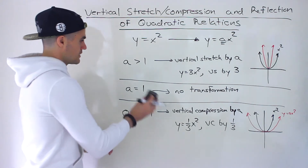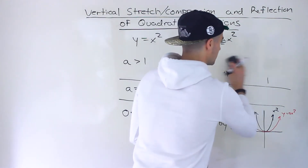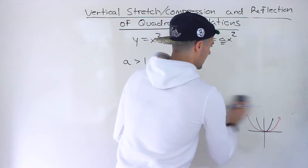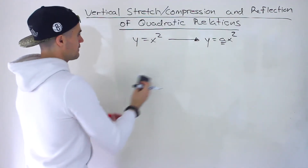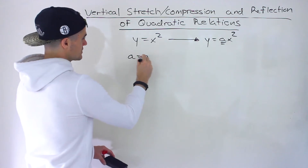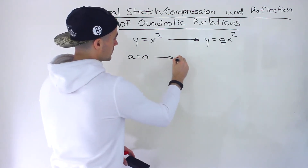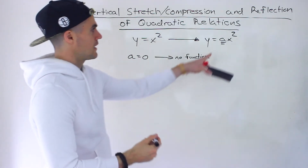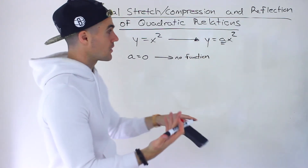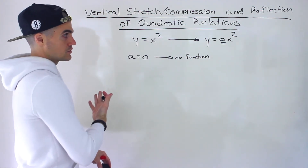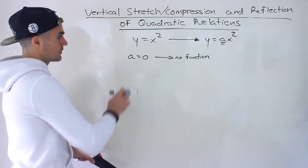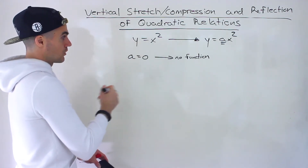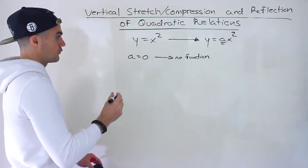The next case would be if we have an a value of zero. An a value of zero means there would actually end up being no quadratic function. You're not going to get that case usually, because if a is zero, we just end up with y equals zero — that's just the horizontal line at a y value of zero. So this case you don't necessarily have to worry about; I'm just going through all the possible cases that can come up for a.